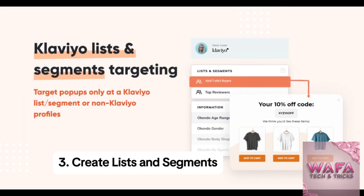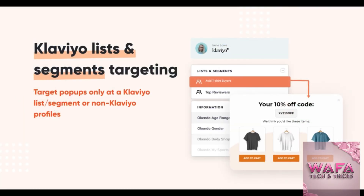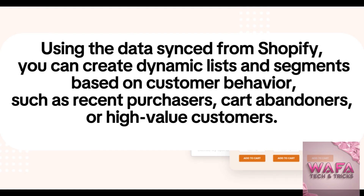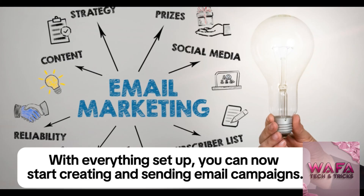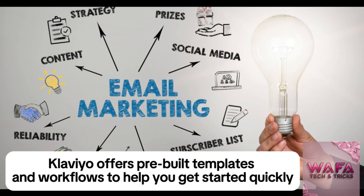Step 3: Create lists and segments. Using the data synced from Shopify, you can create dynamic lists and segments based on customer behavior, such as recent purchasers, cart abandoners, or high-value customers. Step 4: Start email campaigns. With everything set up, you can now start creating and sending email campaigns. Klaviyo offers pre-built templates and workflows to help you get started quickly.